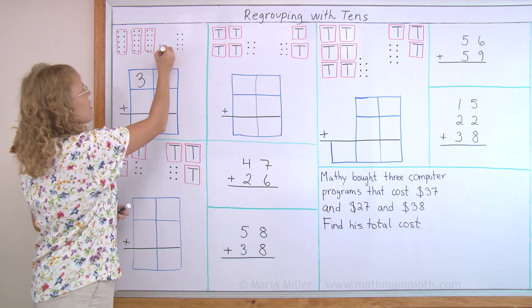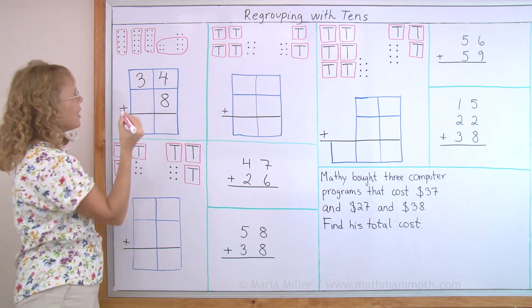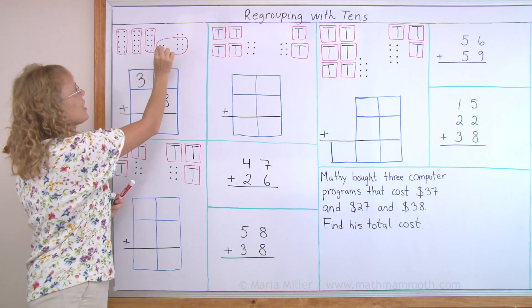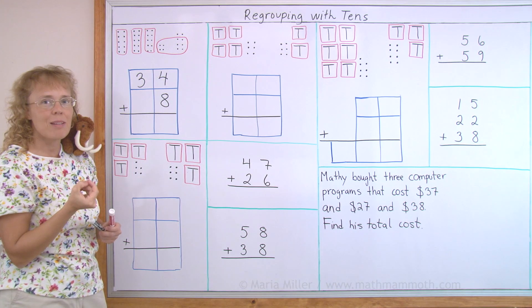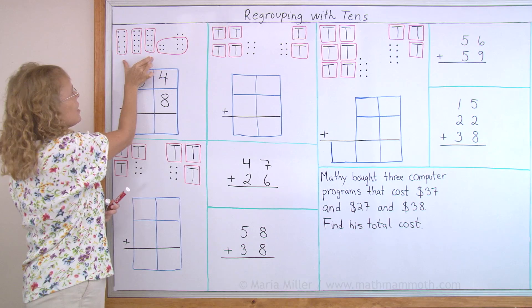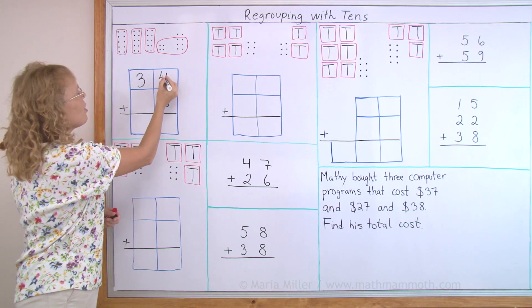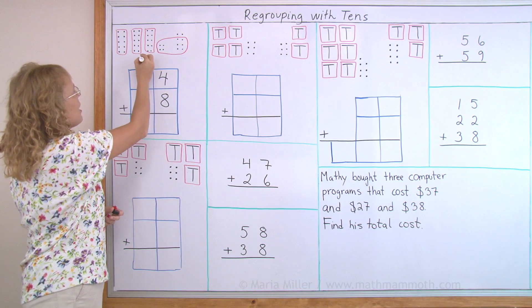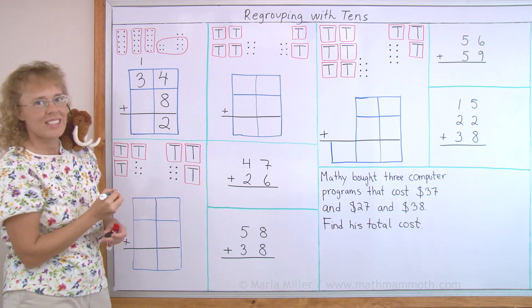So let me make that ten, four and six dots from here. Now this is called regrouping because I take these individual little dots, these ones, and I make a ten with them. So I group these with the other tens. And here I will show it like this. Four plus eight equals twelve, and so that makes one ten, and I write the one ten here, and the two ones here.